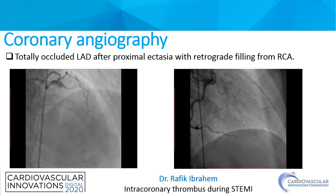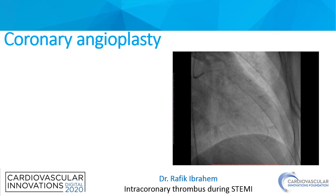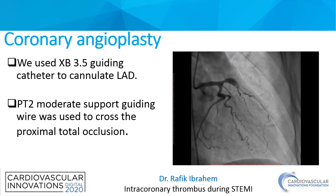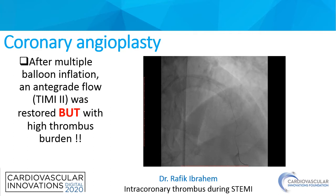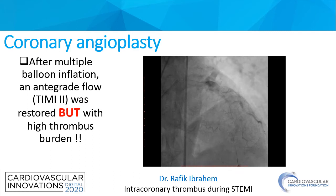Coronary angiography showed total occluded LAD after proximal ectasia with retrograde filling from RCA. For coronary angioplasty, we used an XP guiding catheter 3.5 to cannulate the LAD, and a PT2 moderate support guiding wire was used to cross the proximal total occlusion. After multiple balloon inflations, antegrade flow TIMI 2 was restored but with high thrombus burden.